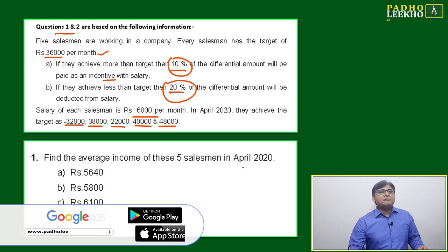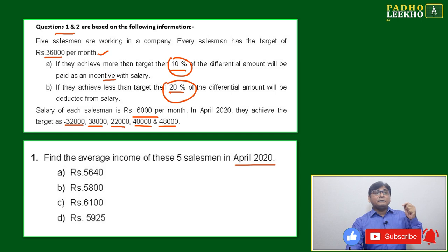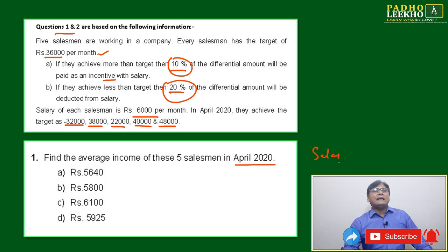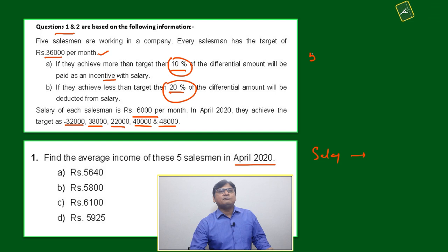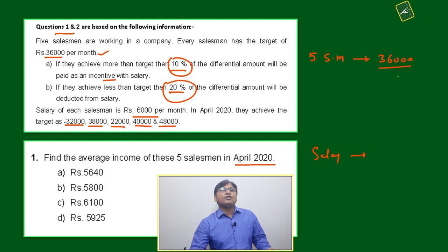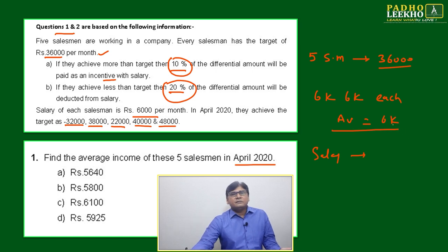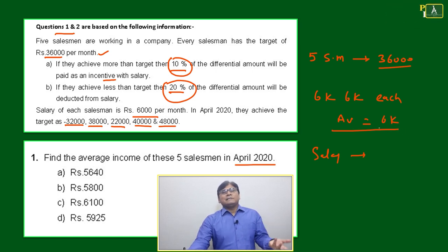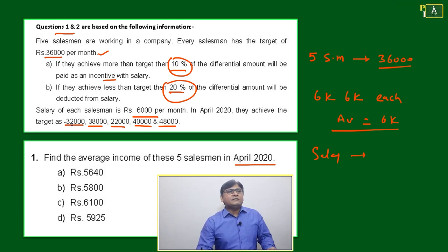Question number one: find the average income of these five salesmen in April 2020. Average income — not average target achieved, but actual income. Just suppose if all five salesmen had achieved exactly 36,000, everybody would get 6,000 each, and the average would also be 6,000. When all numbers are the same, the average is the same — adding 6k five times and dividing by five gives 6k.